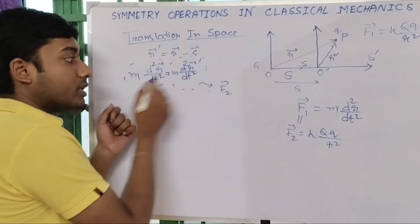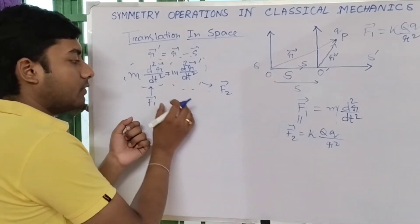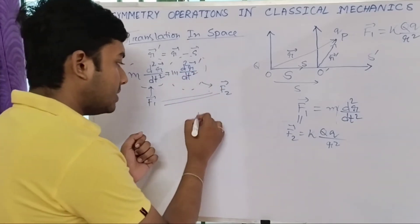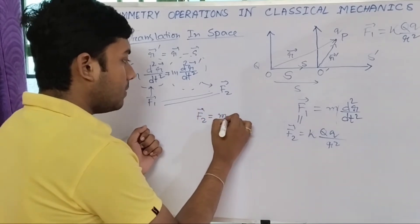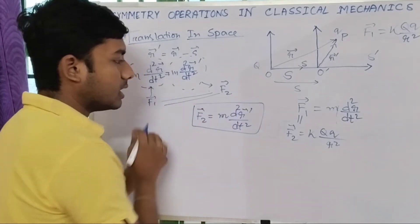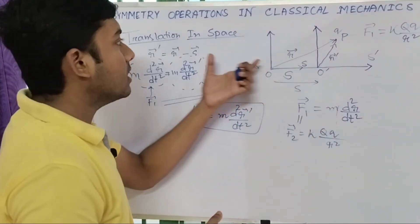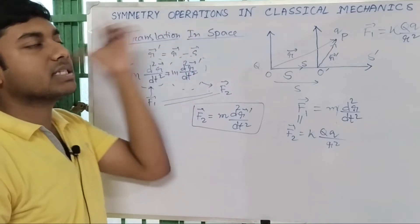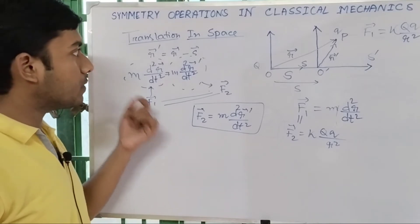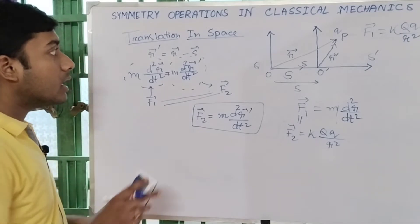Since F1 equals F2, and we have shown that F1 equals m d²r-dash/dt², it follows that F2 equals m d²r-dash/dt². This is Newton's second law in S-dash. Therefore, Newton's second law is invariant under space translation.